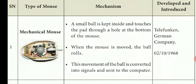When we move the mouse pad, the ball rolls. This movement of the ball is converted into signals and sent to the computer, moving the cursor on the screen. The mechanical mouse was used in the old days.